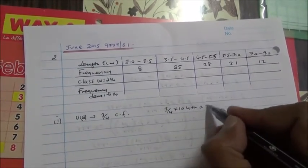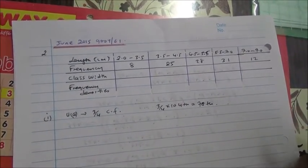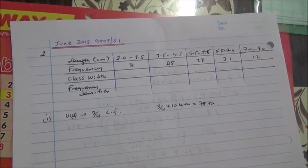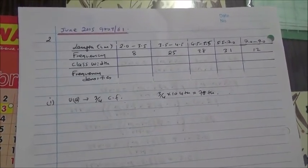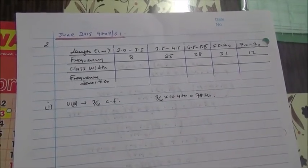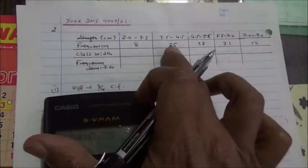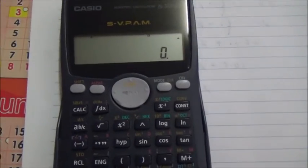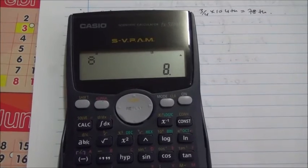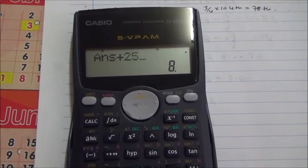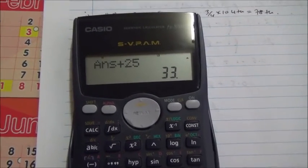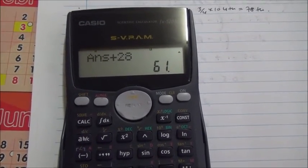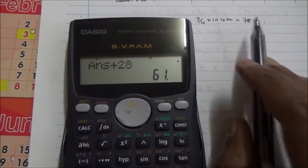So if we want to find where the upper quartile is, its location is on the 78th. So let's take a look. How are we going to do this? We have 8, 25, 28 and so on. So if you take 8 plus 25, you reach 33. Plus 28, you reach 61. That's still not covers 78th.